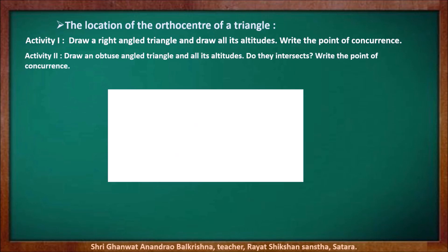For another activity, draw an obtuse-angled triangle and draw all its altitudes and observe whether they intersect. After doing this activity, we find that the altitudes, shown in red, meet each other at a point outside the triangle. This means the orthocenter of an obtuse-angled triangle is in the exterior of that triangle.